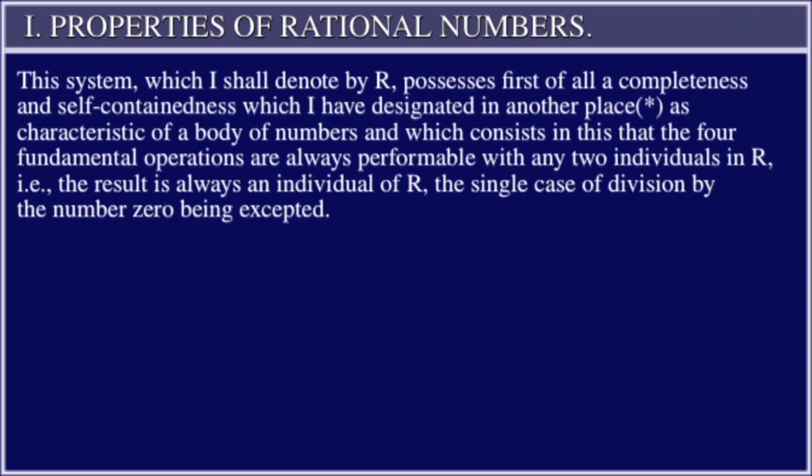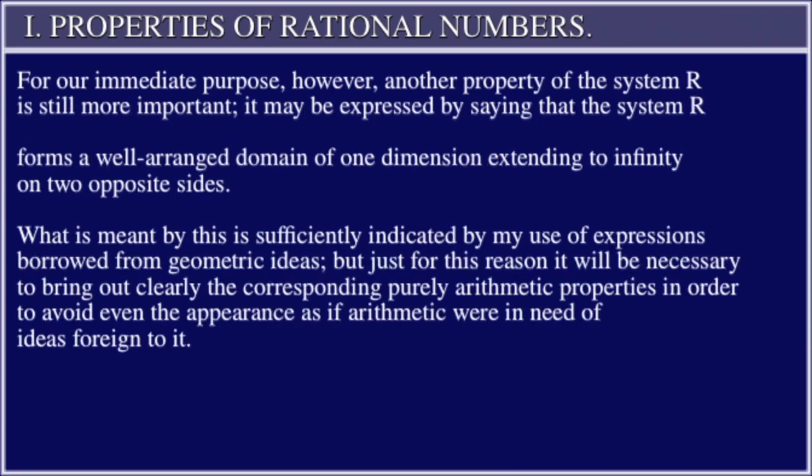completeness and self-containedness which I have designated in another place as characteristic of a body of numbers, which consists in this: that the four fundamental operations are always performable with any two individuals in R, i.e., the result is always an individual of R, the single case of division by the number zero being accepted.